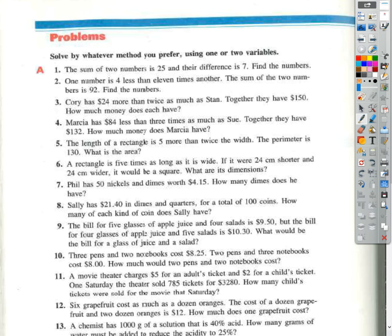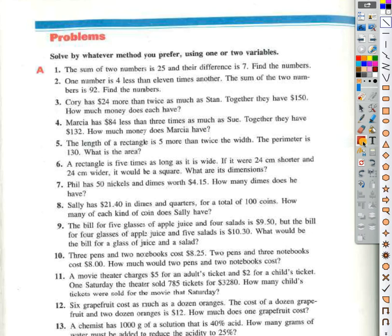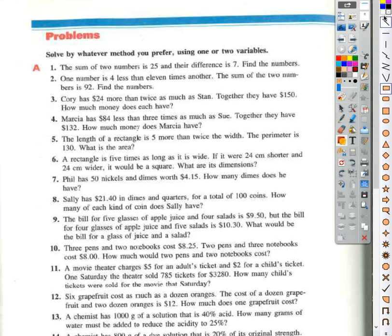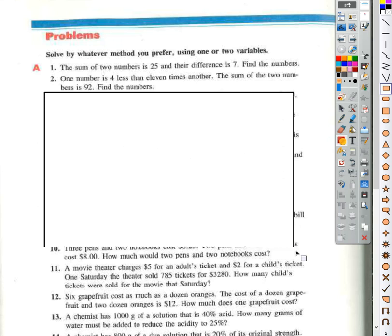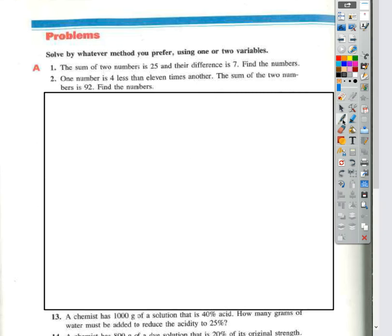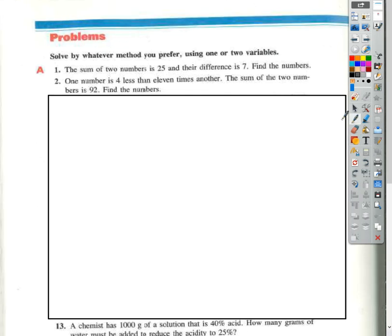I'm going to be looking at the evens because you are charged with getting the answers for the odds. So I'm going to give myself a little blank space to write. One number is 4 less than 11 times another. The sum of the two numbers is 92. Find the numbers.